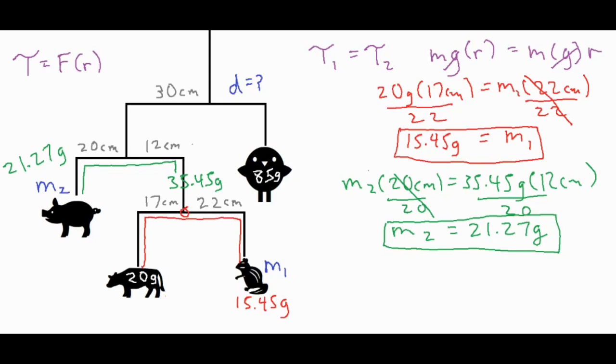All right, so we found the unknown mass of the pig, it is 21.23 grams. And now we're almost done, we're going to work our way up one more step. Now we have this final portion over here that is also in equilibrium.